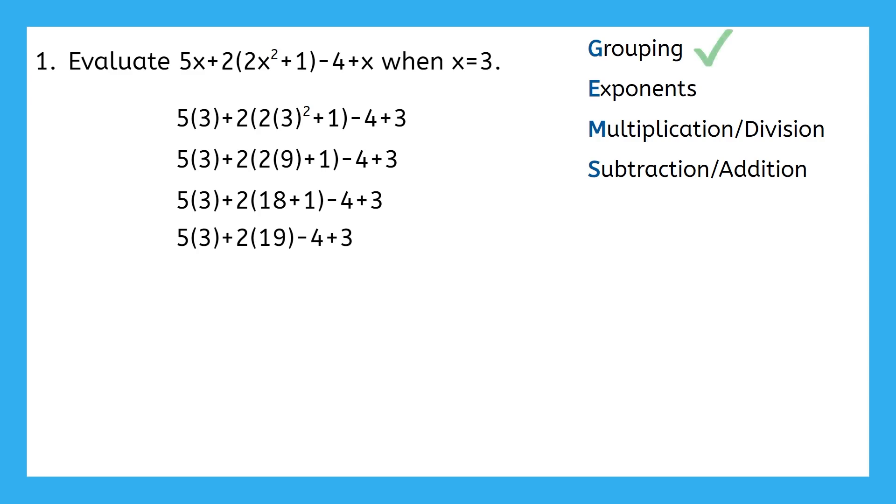We are done with the grouping, and I don't see any more exponents either. All that's left is some multiplication and some addition and subtraction. Which of these does order of operations tell us to focus on first? Yep, let's take care of the multiplication, and we're supposed to calculate this from left to right.